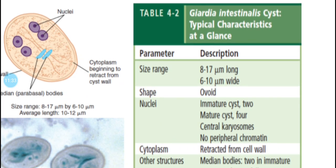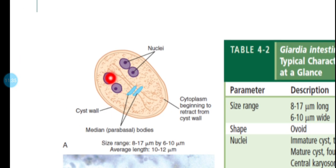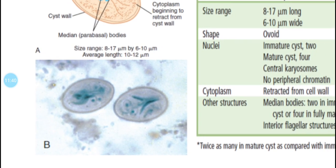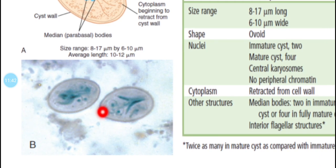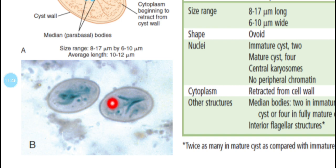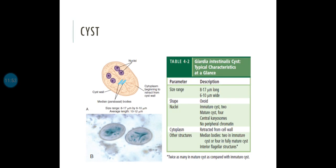You can identify the interior and outer fragilis structures, the oil structure, and the standard structure. The two-nuclei form represents the immature cyst and the four-nuclei form represents the mature cyst. This is the type of cyst of Giardia lamblia or Giardia intestinalis that you can identify in diarrheal stool under the microscope when a patient is suspected of infection.